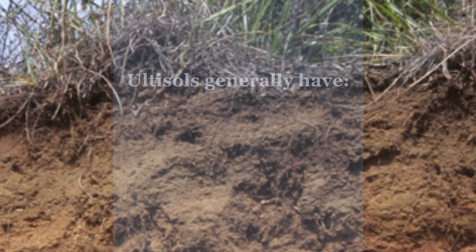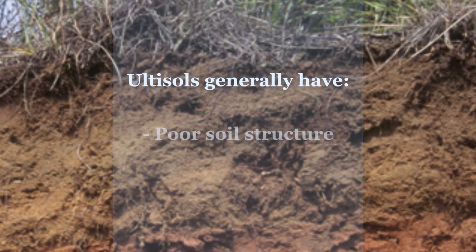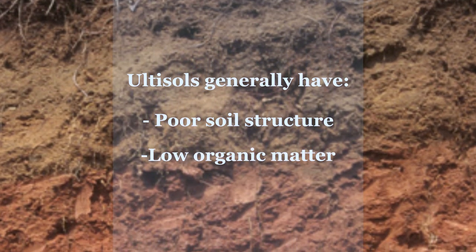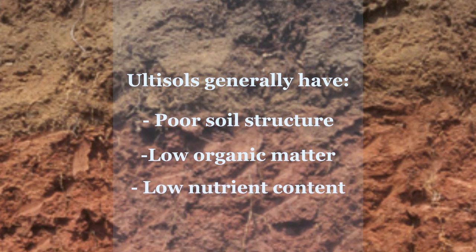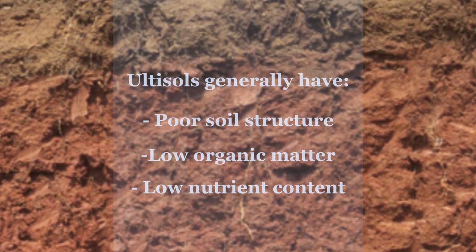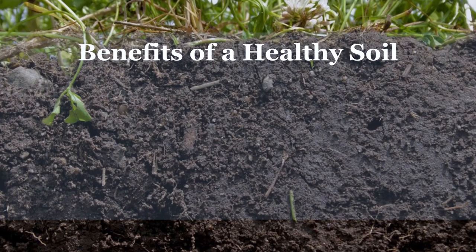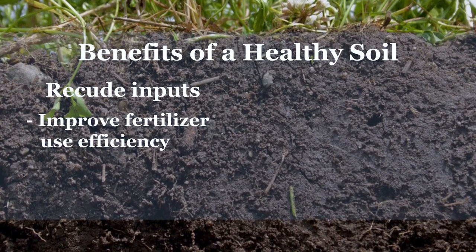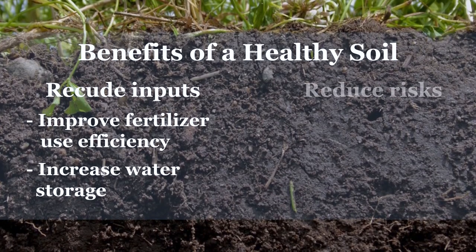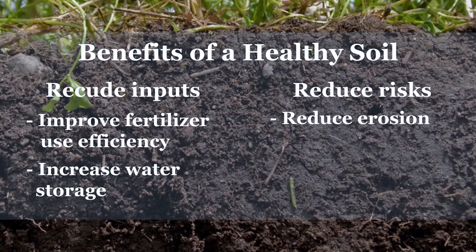Our soils in this region are characterized as ultisols — generally poorly structured soils with low organic matter contents that are not naturally fertile. Using the conservation system with tillage and cover crops adds residue back to the system and hopefully improves soil structure because we're not doing so much disruptive tillage. As a result, we increase organic matter and subsequently soil carbon, which has a positive effect on many soil physical and chemical properties that will ultimately increase productivity for our soils in the region.